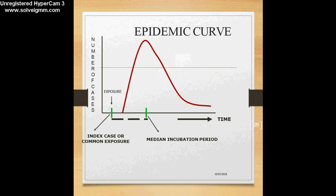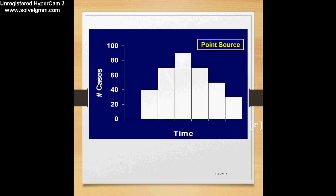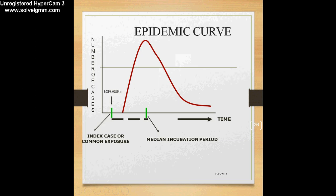The same can be represented using a histogram — joining the midpoints of these histograms gives the similar curve. This type of spread is called a point source epidemic, because all cases are exposed to a single source at a single point in time. There will be an explosive increase in cases, and all cases will be treated or relieved of symptoms at the same time. If you look at the curve, it has a single peak — cases rise gradually and then fall with a sharp fall.